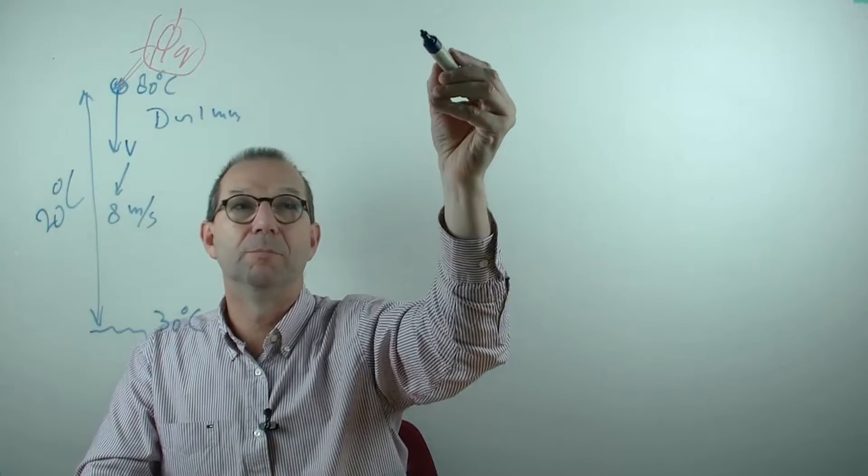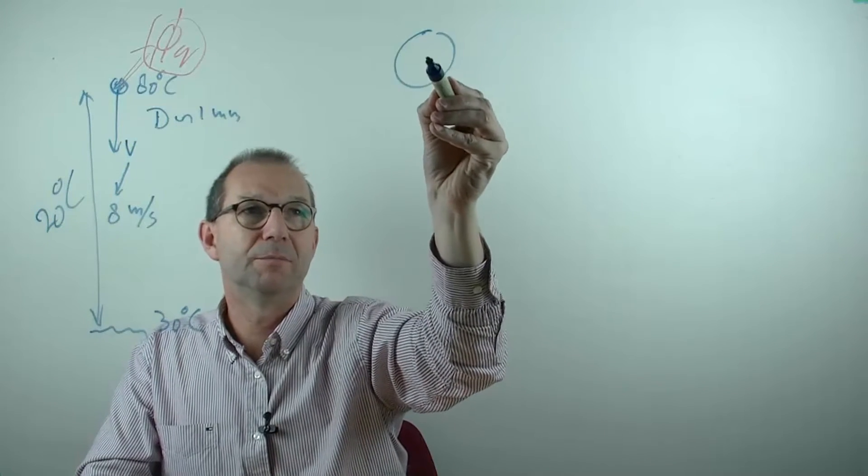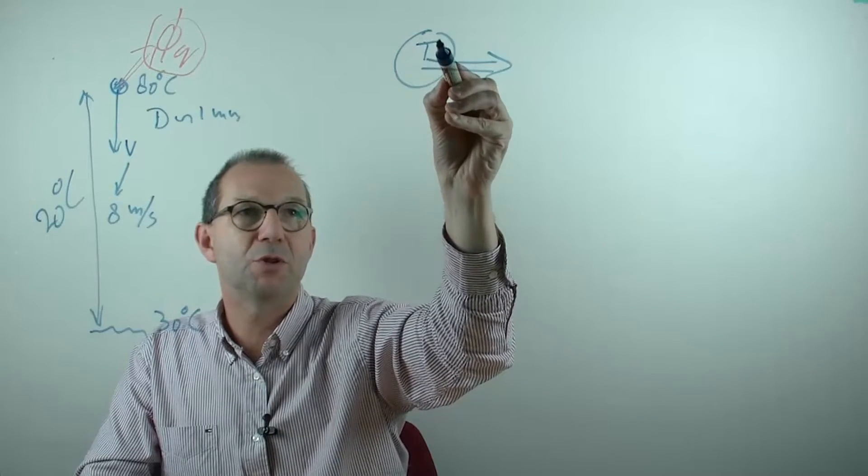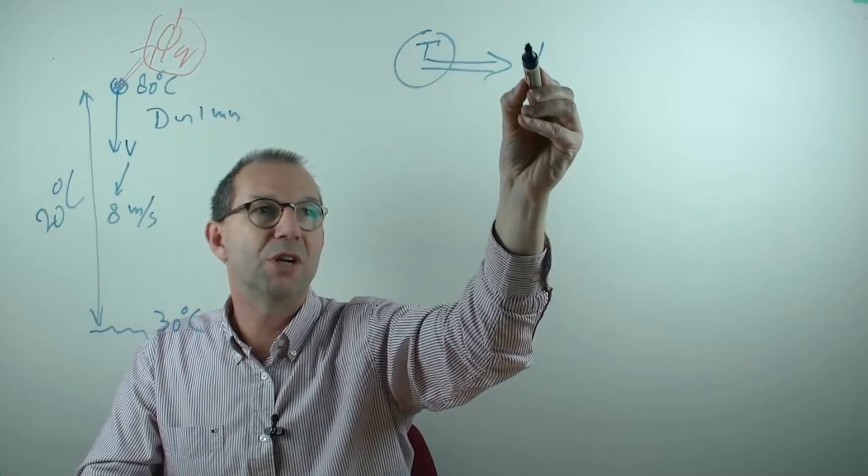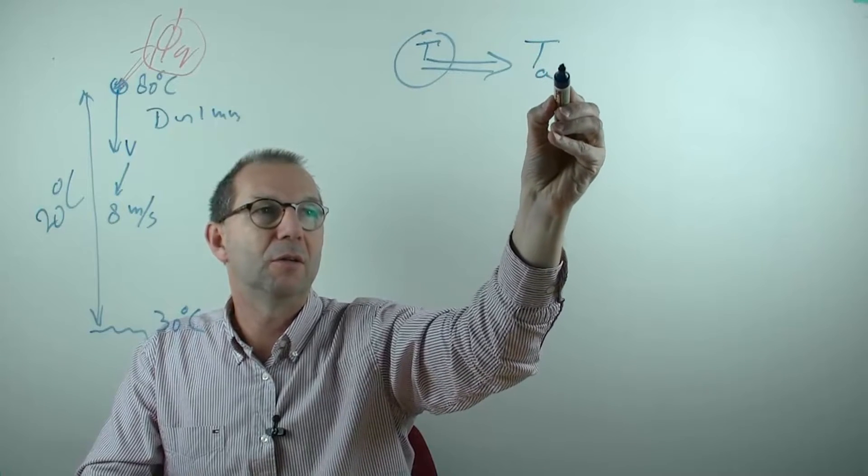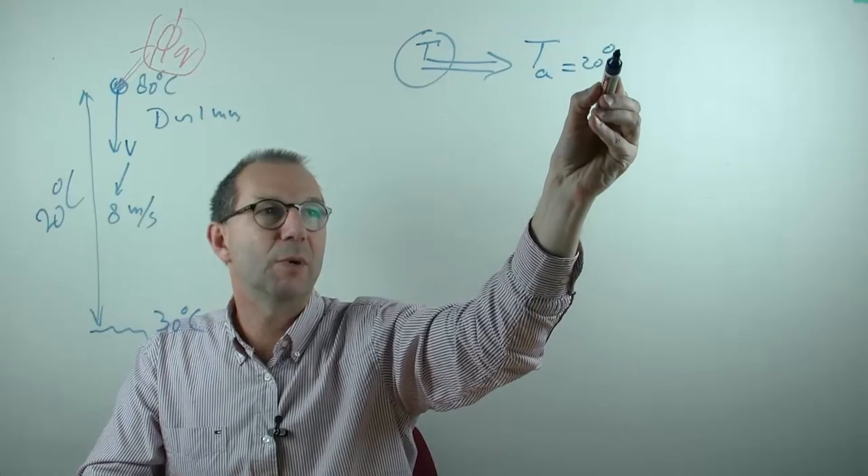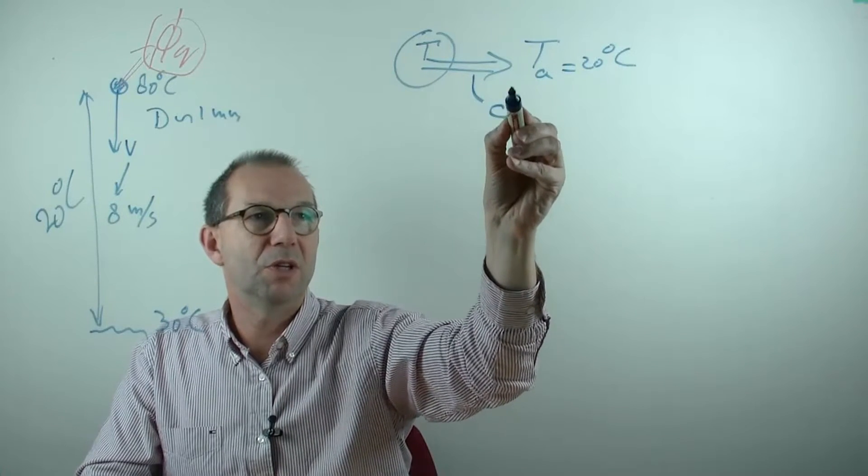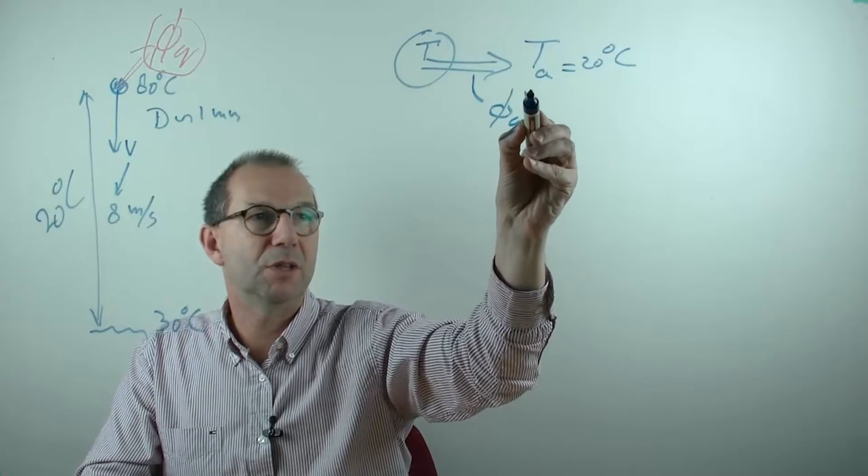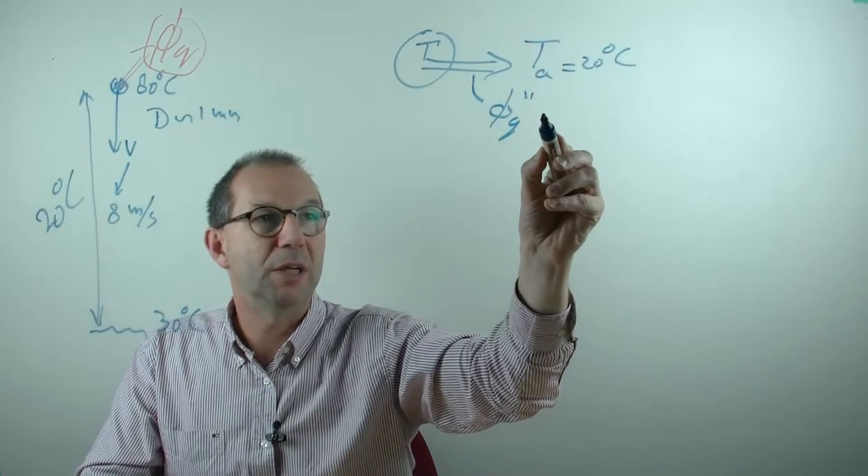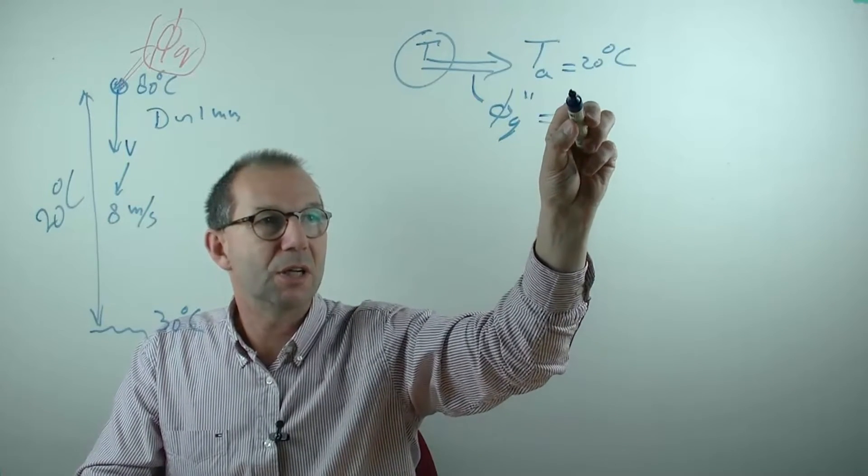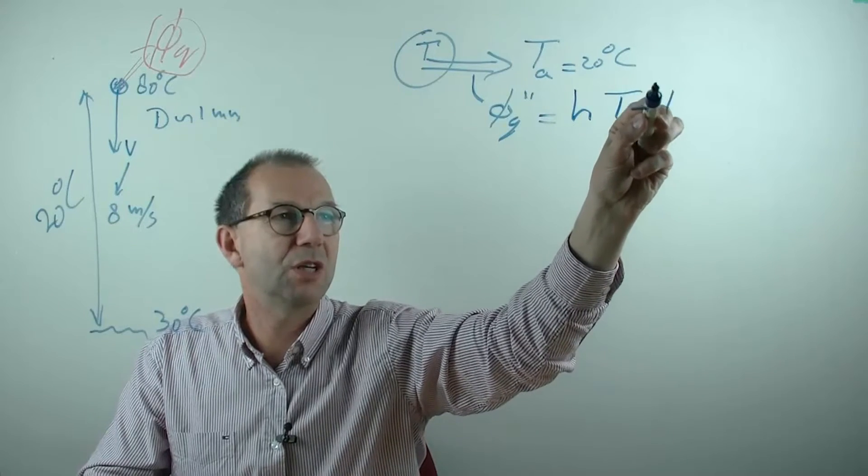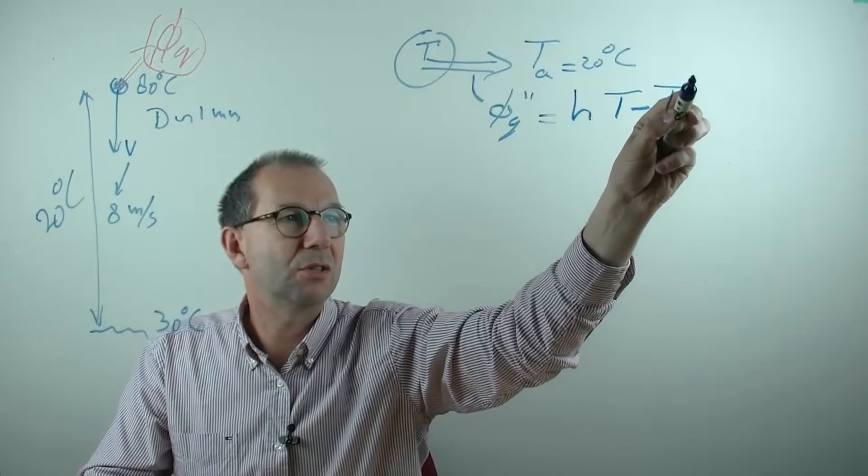So I'll redraw the particle somewhat bigger. Heat is going out because there's a driving force from the temperature of the particle towards the temperature of the air which is fixed at 20 degrees Celsius. And I need to know what this flow or better this flux is. And we know how to do it. It is the heat transfer coefficient times the driving force, T of the particle minus T of the air.